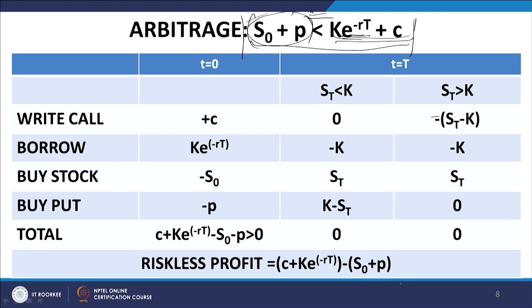Now let us look at the left-hand side. We have to go long on this — long means we will buy the stock. It is a cash outflow at t equal to 0; I pay S₀ and get one unit of the stock. When I sell in the market at t equal to capital T, I get S_T in both cases — it is independent of which state of the world occurs at maturity. I will still get S_T whatever that S_T happens to be. I also have to go long in the put option — I buy the put option, paying a price, so there is a minus sign. The payoff from the long put is K minus S_T if S_T is less than K, and 0 if S_T is greater than K.